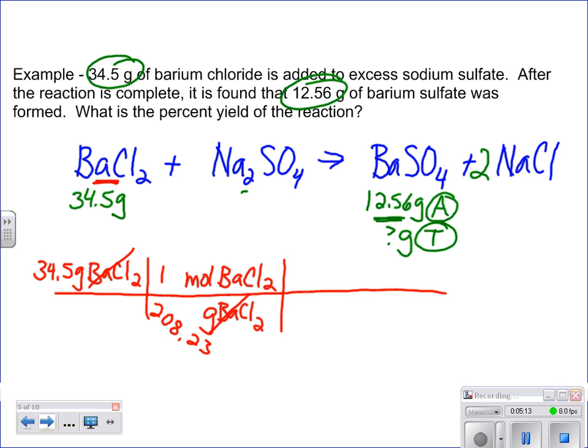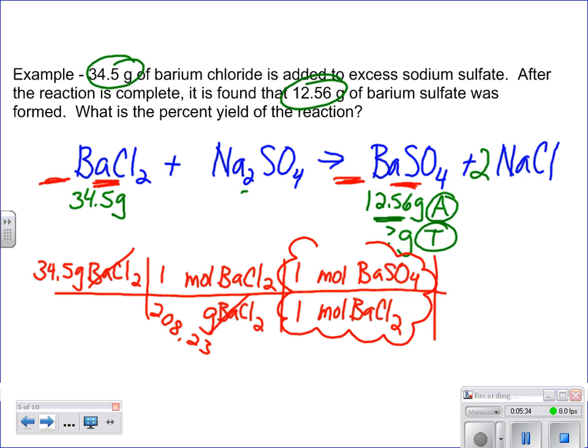Now we've got our answer as moles of barium chloride. We don't care about this anymore. We want to get rid of moles of barium chloride and instead find out information about our moles of barium sulfate. This is when we look at our balanced chemical equation. It happens to be a one-to-one ratio. This step is that mole ratio step when you go from one substance to another.